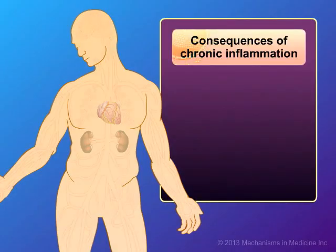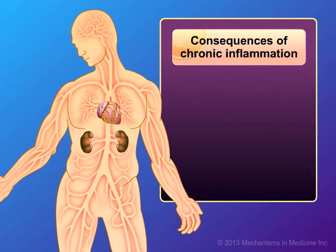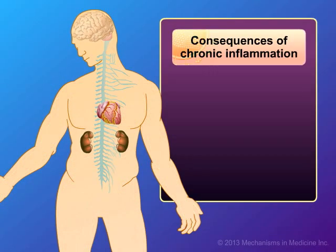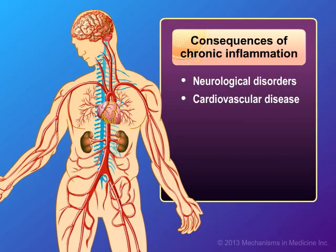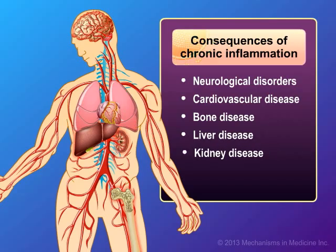The consequences of chronic inflammation, despite effective suppression of HIV replication with ART, is an area of active research that may lead to damage to multiple organs with increased risk for common diseases, such as neurological disorders, cardiovascular disease, bone disease, liver disease, kidney disease, and pulmonary disease.